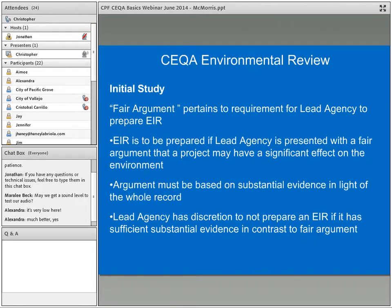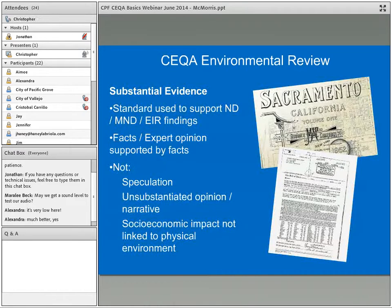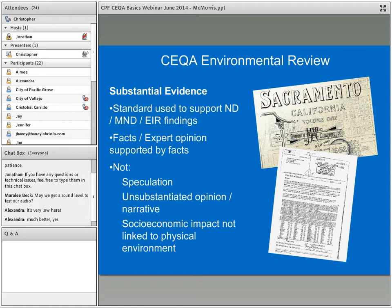The lead agency does have discretion. Case law provides that lead agencies have the discretion not to prepare an EIR if they have sufficient substantial evidence in contrast to the fair argument being presented. The substantial evidence standard is used to support a negative declaration, mitigated negative declaration, or EIR. Substantial evidence is facts, or expert opinion supported by facts — there must be evidence and research to back up what the expert is saying.